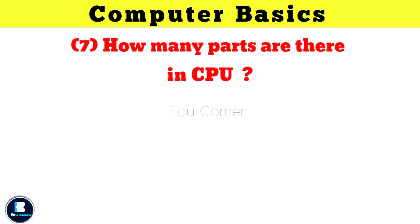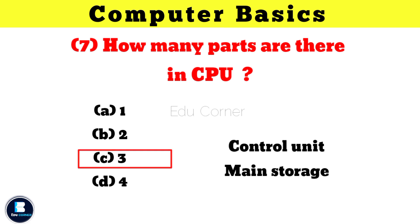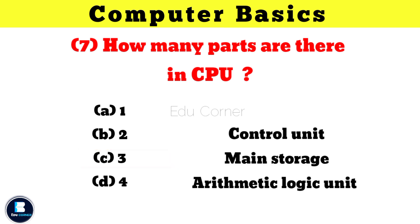How many parts are there in CPU? 3 parts: Control unit, main storage, and arithmetic logic unit.